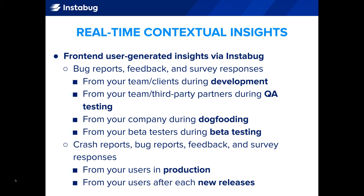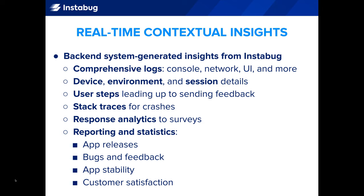From development, QA testing, dogfooding, beta testing, in production, after new releases, and beyond. With each of those pieces of user-generated feedback you receive, you get a wealth of background information from Instabug to help your team triage incoming issues, catch problems early, identify solutions, and act quickly. And if you're managing a portfolio of apps, you also get consolidated reporting about all of those apps in one place on the Instabug dashboard, so you can track and monitor performance, and then act appropriately.